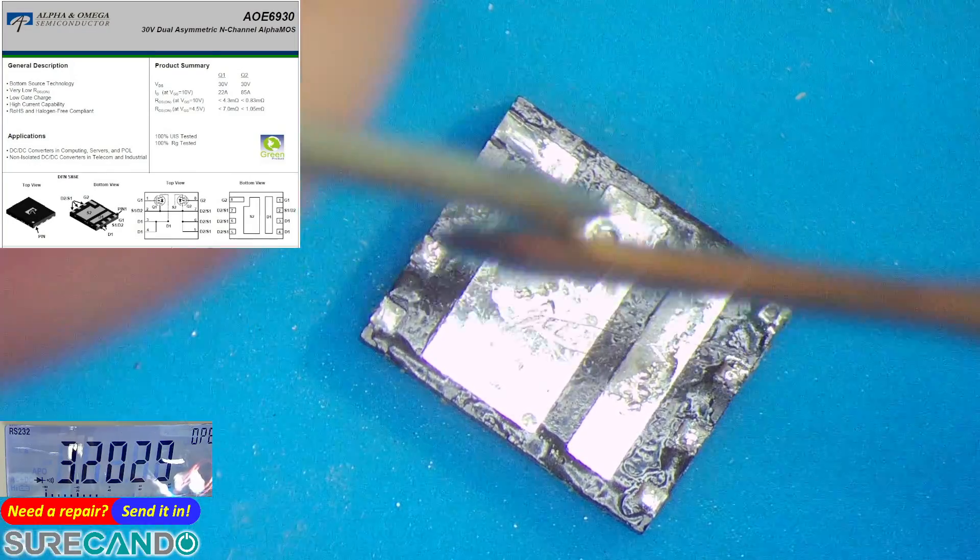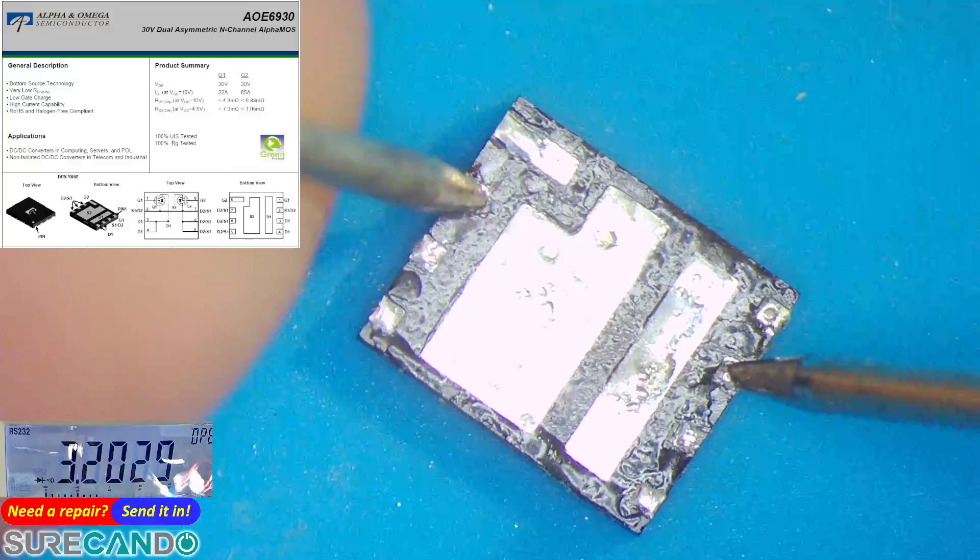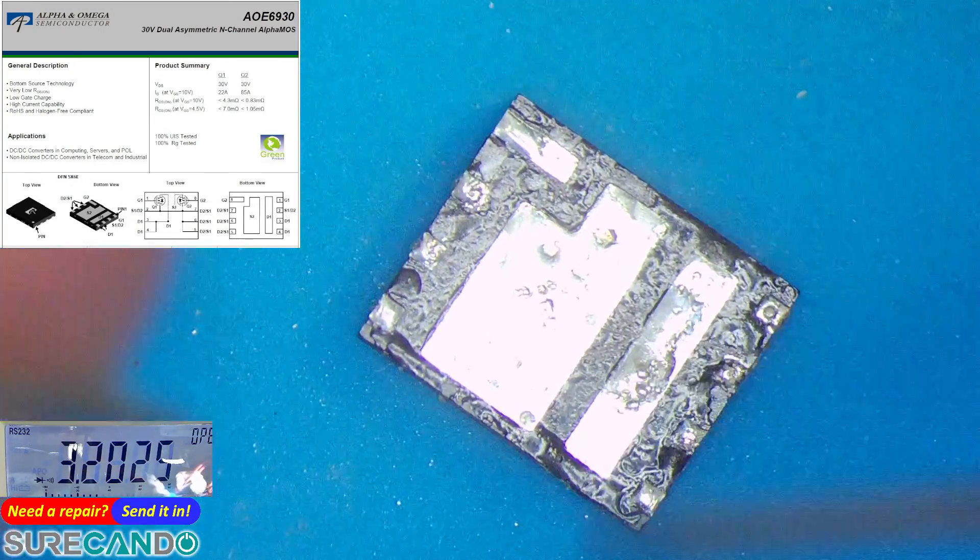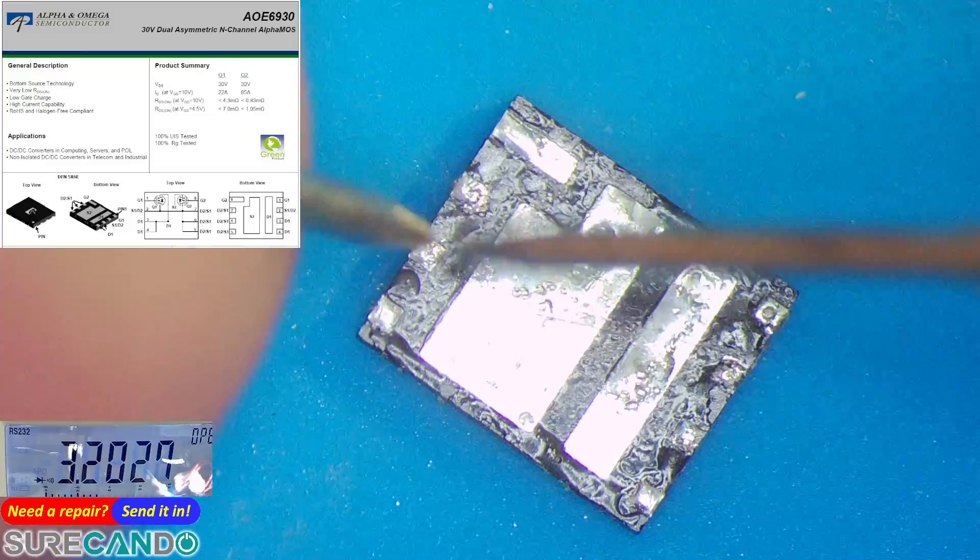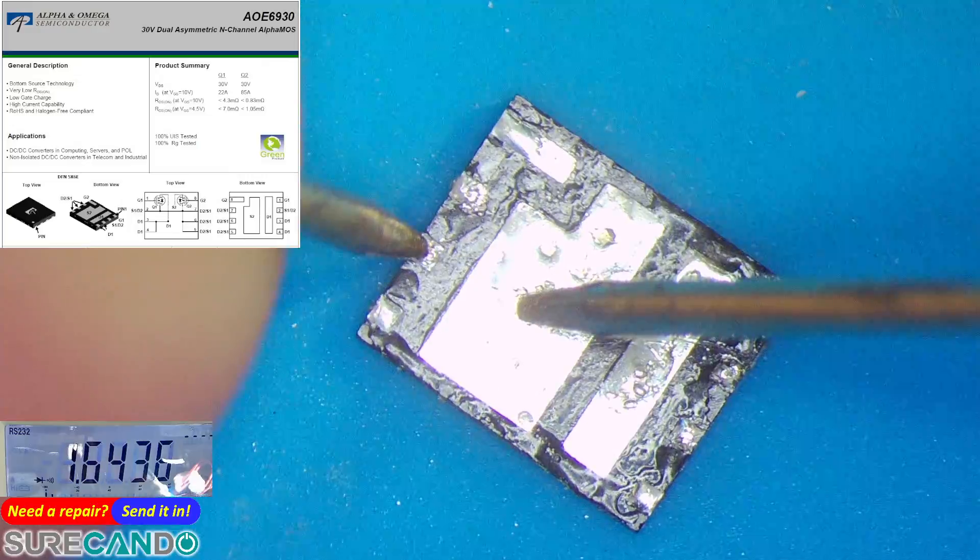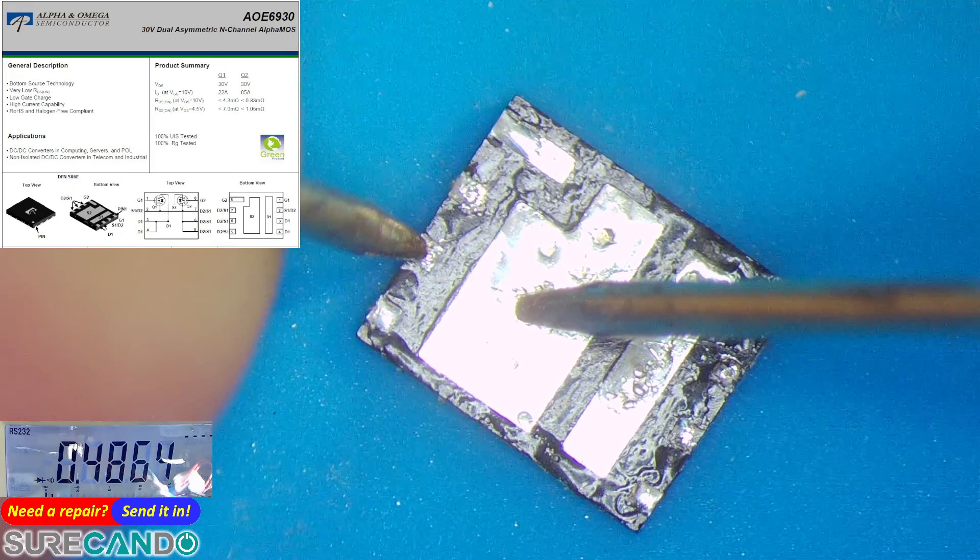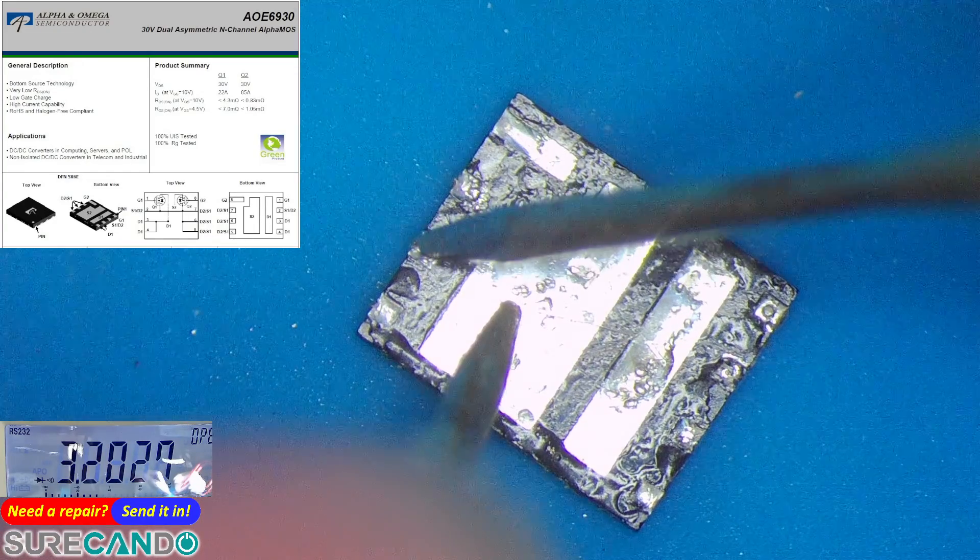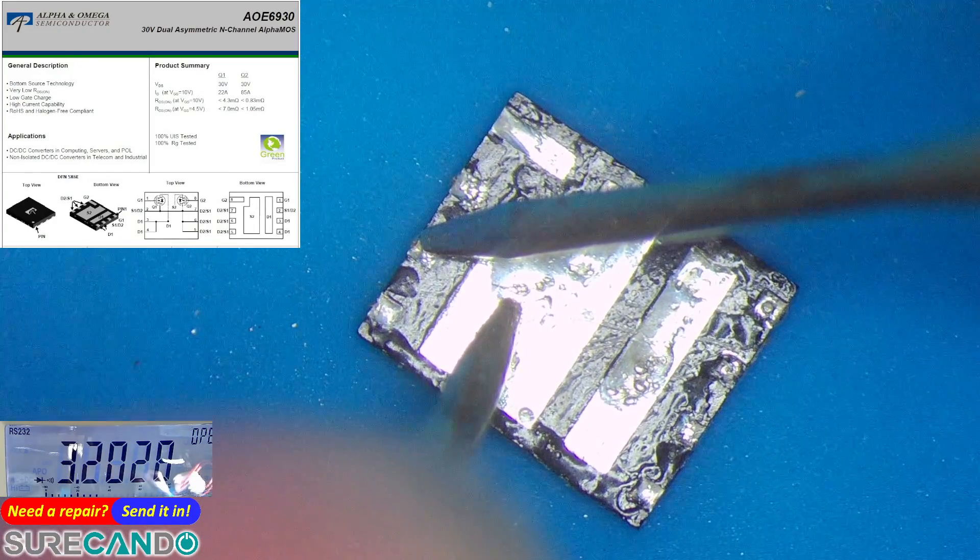I'm going to test whether the source and drain of this MOSFET are open or not. We can see there's a voltage drop but no beep, that means it's off and it is good. Now testing the other way, no voltage drop. That's a good sign.